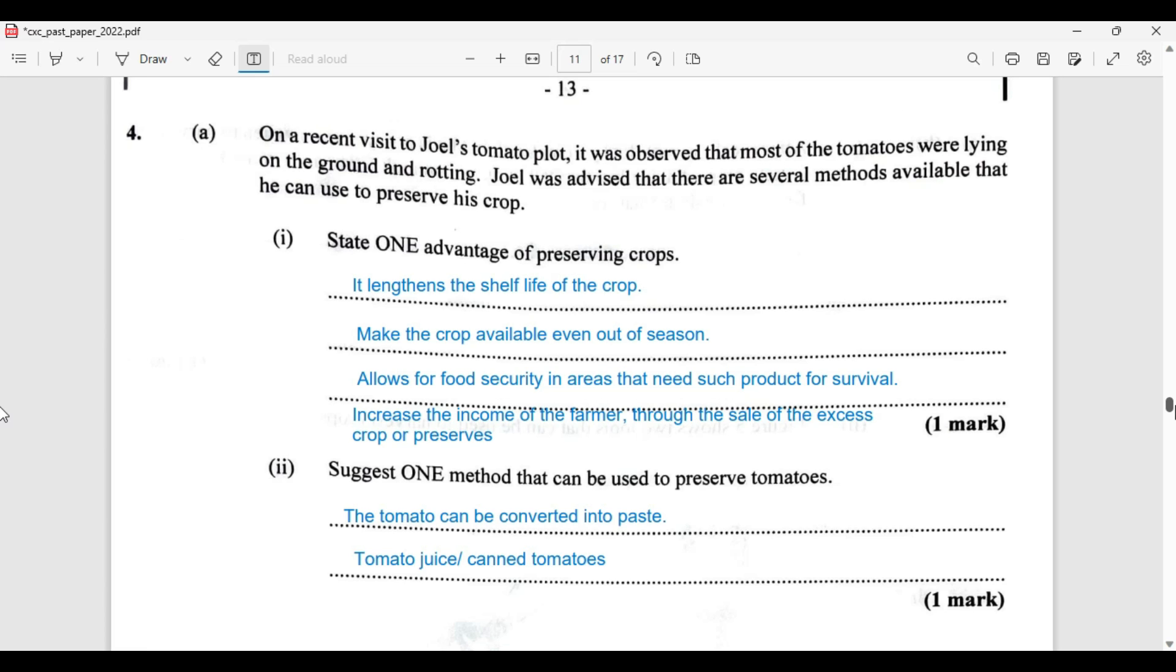On a recent visit to Joel's tomato plot, it was observed that most of the tomatoes were lying on the ground and rotten. Joel was advised that there are several methods available that he can use to preserve his crop.